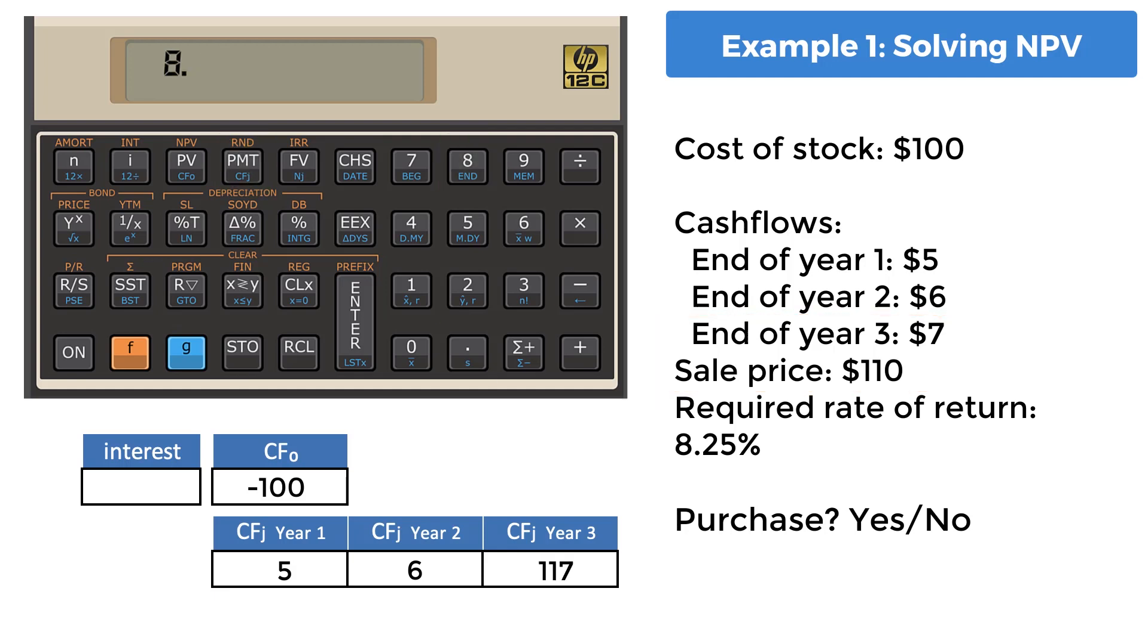Enter the required rate of return, 8.25%, as 8.25, and then place it in the interest register using the I key. The final step is calculating the NPV value using the prefix F key and the PV key on the top row. The resulting calculation shows $1.98.